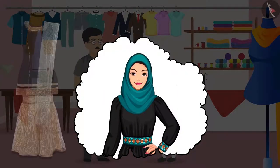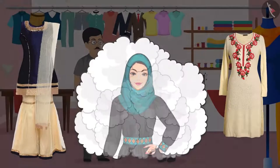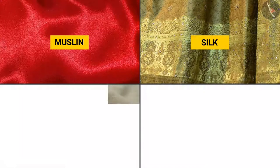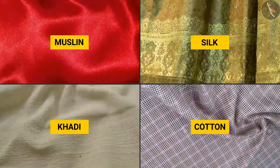I have to get a garara and suit stitched for the occasion. You have such pretty, colorful clothes in your shop. I will definitely come to you to get my new dress stitched. Naseema, these clothes are not just of different colors, but are also made of different materials. Touch and feel them. This is mazalan. This is silk. This is khadi. And this is cotton. Why are these materials different?